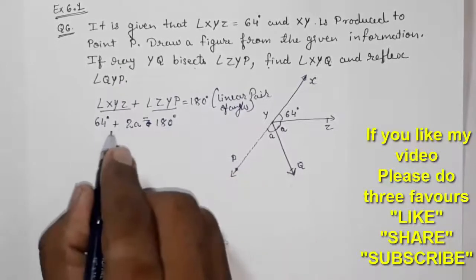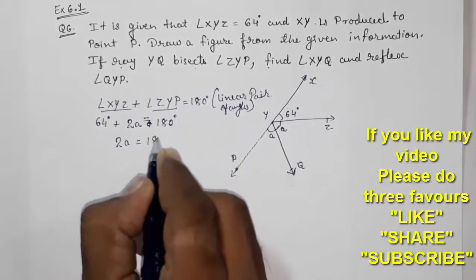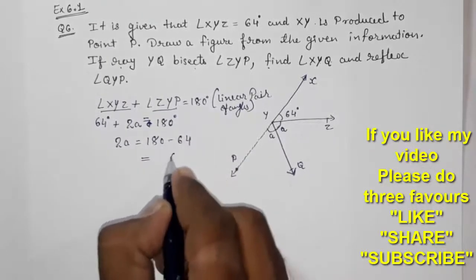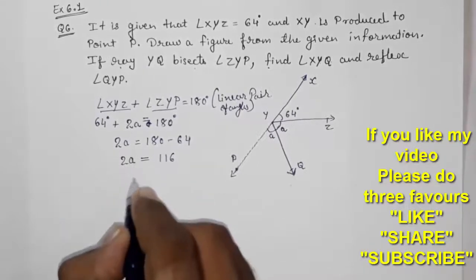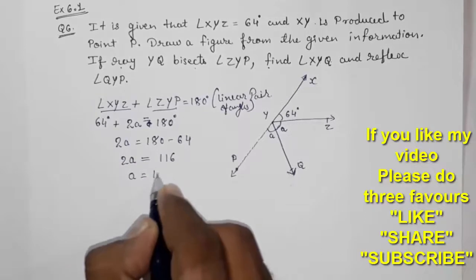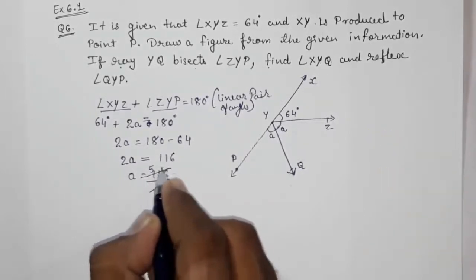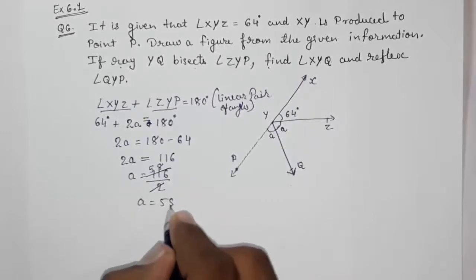Now take this 64 on that side. 2A is equal to 180 minus 64, that will be 116. So 2A is equal to 116. A will be 116 by 2, that is 58. So our A will be 58 degrees.